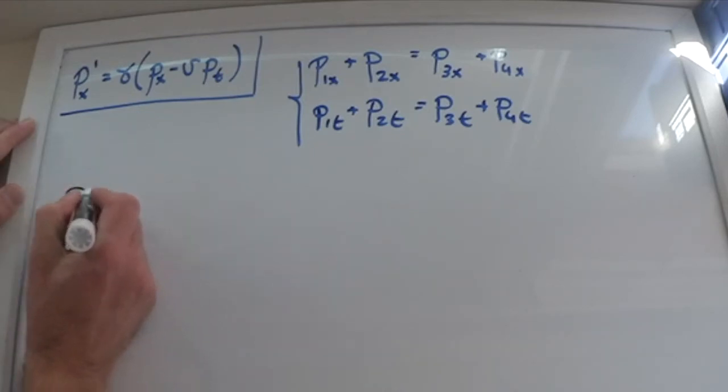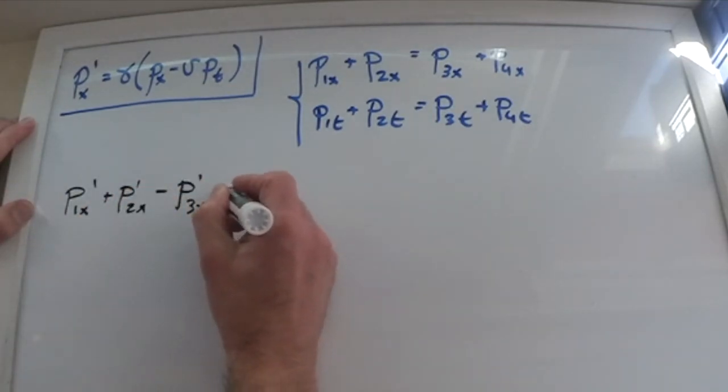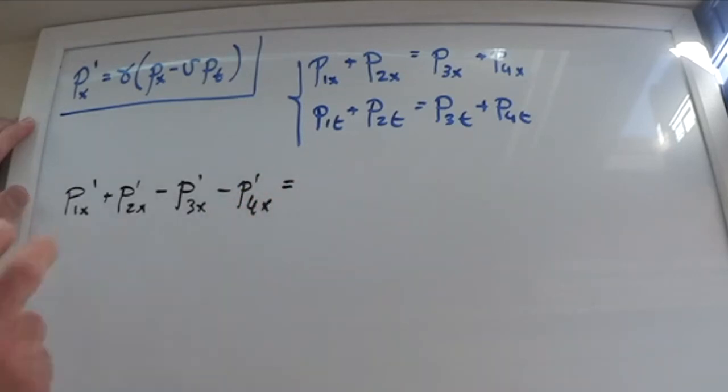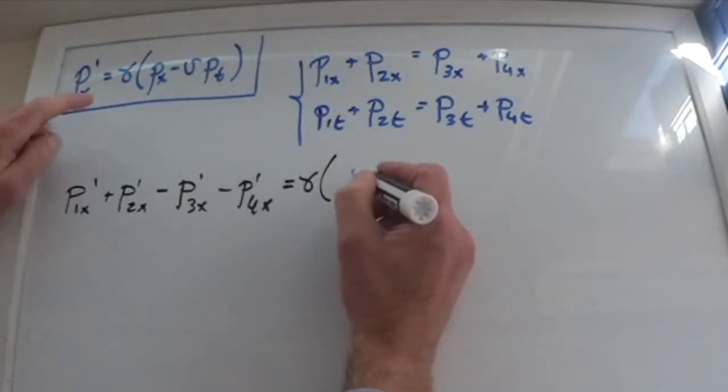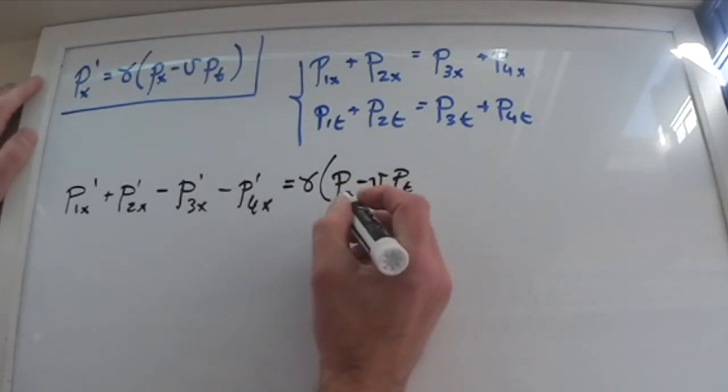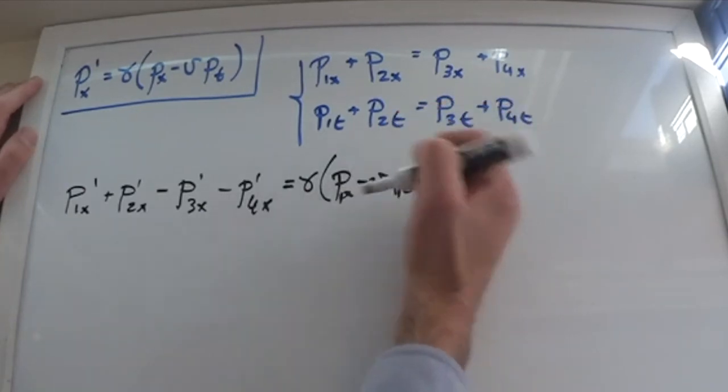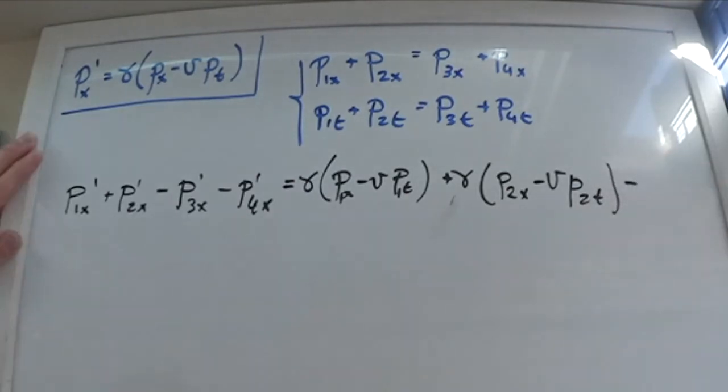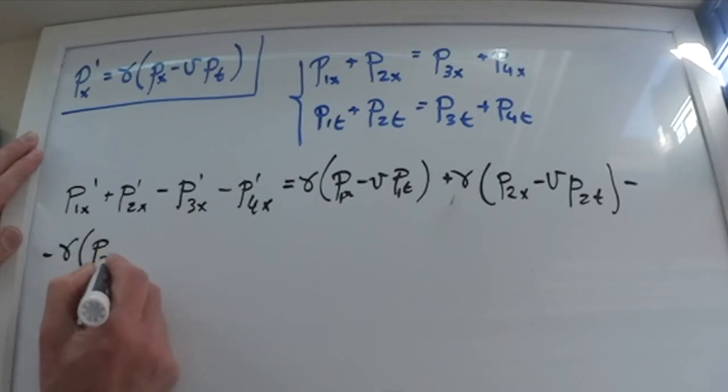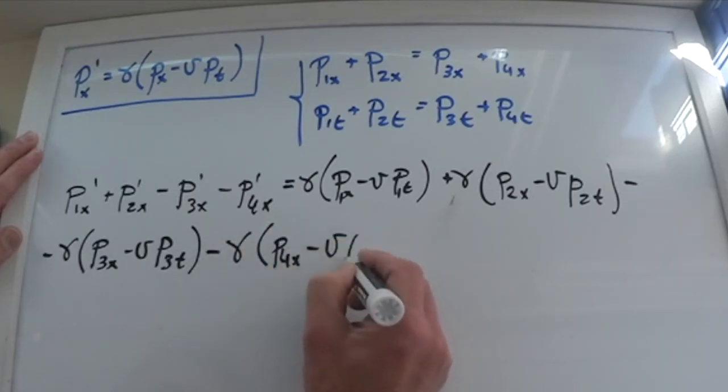So I have to write here p1x prime plus p2x prime minus p3x prime minus p4 prime. So this is the initial momentum of particle 1 and particle 2, and the final momentum of particle 1 and particle 2. I will just substitute that transformation for the first. This is going to be gamma times p1x minus vp1t, and that is going to be for 1 and for 2, plus gamma p2x minus vp2t minus minus p3x minus vp3t minus minus p4x minus vp4t.